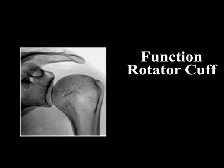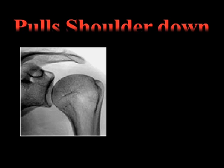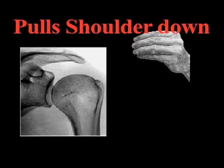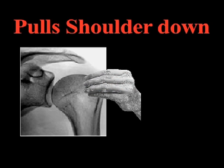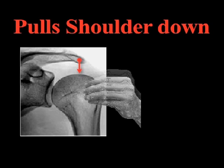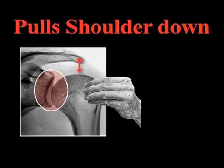The rotator cuff functions as a shoulder depressor. By holding the shoulder down, away from the roof, it creates room for the cuff tendons to glide back and forth. In addition, the cuff, by maintaining the shoulder in its joint, creates a mechanical advantage for the larger muscles of the shoulder and chest, making them stronger and more effective.